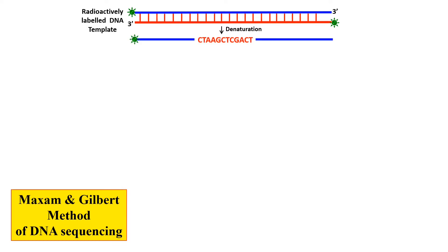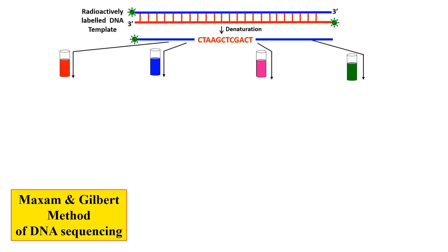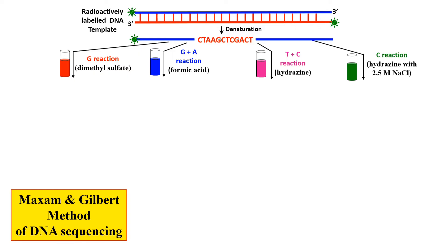Each of the four test tubes contains a specific chemical for base modification. The first test tube has dimethyl sulfate, which modifies guanine residues by adding a methyl group. The second test tube has formic acid for the modification of guanine and adenine. The third test tube has hydrazine for the modification of thymine and cytosine. The fourth test tube has hydrazine along with sodium chloride, which is for the modification of cytosine only.